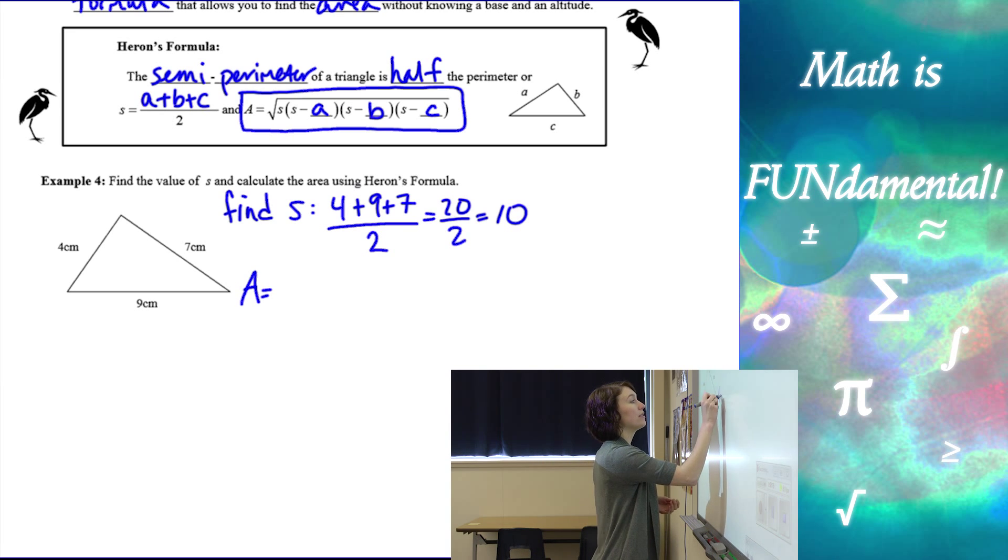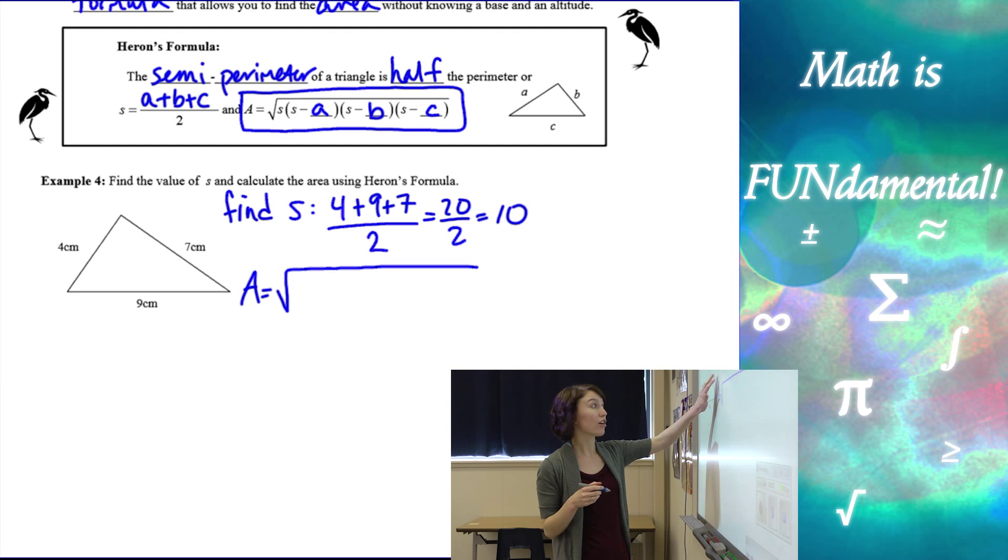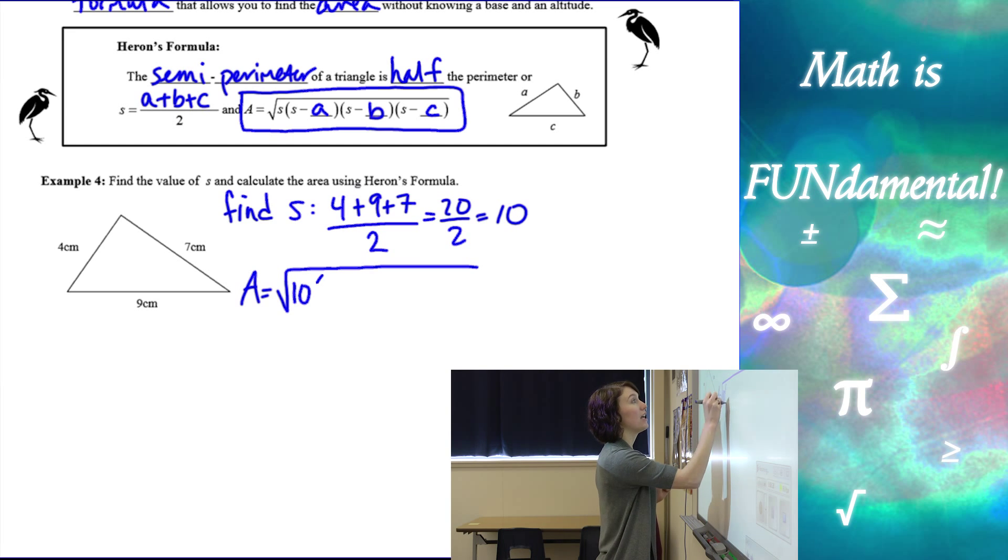So now I can use that and my side lengths, A, B, and C are going to be the side lengths and plug it into my formula. So I have 10 and then times 10 minus four times 10 minus nine times 10 minus seven. And then we're going to simplify.